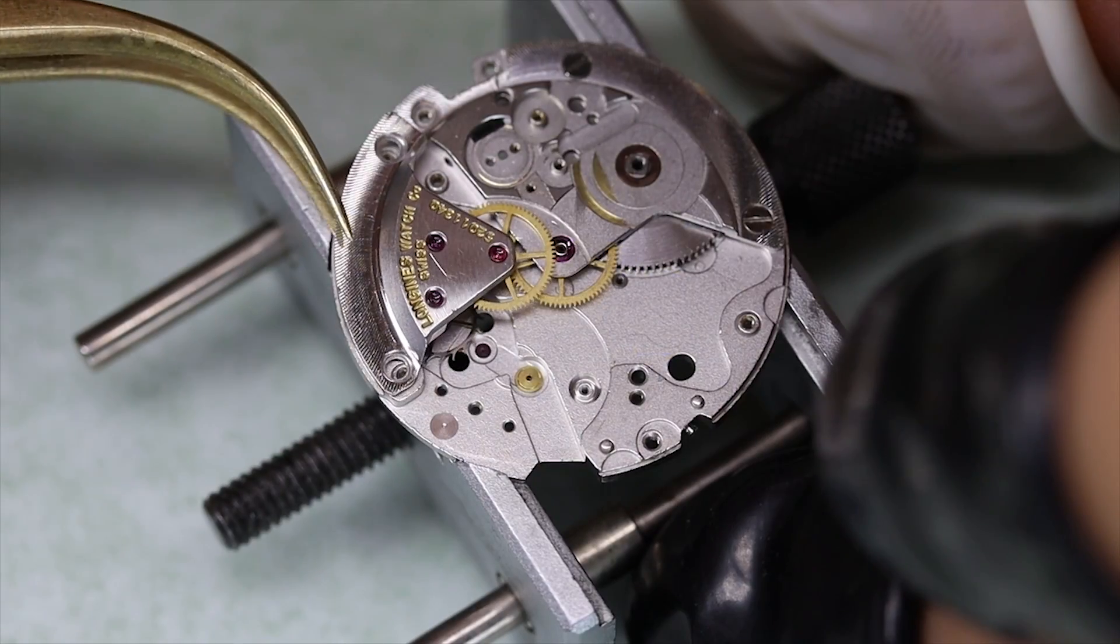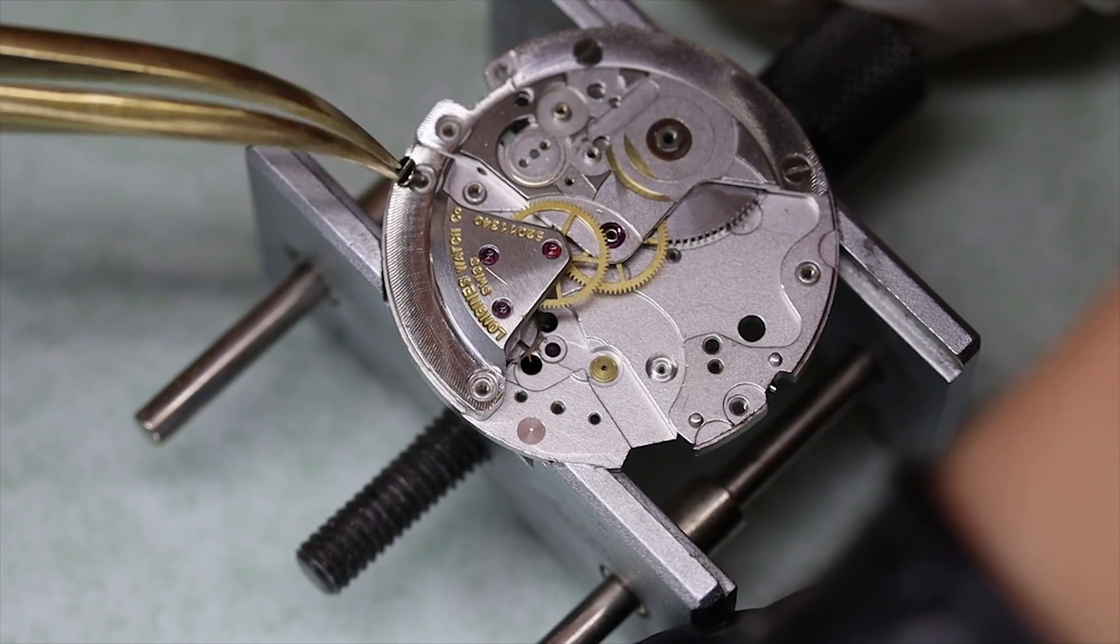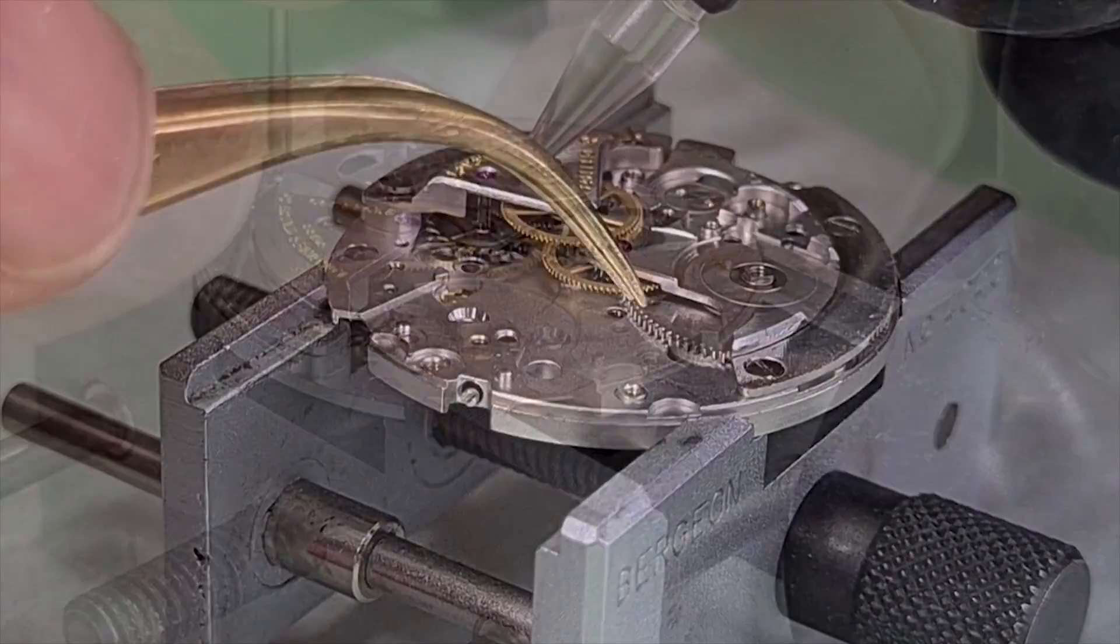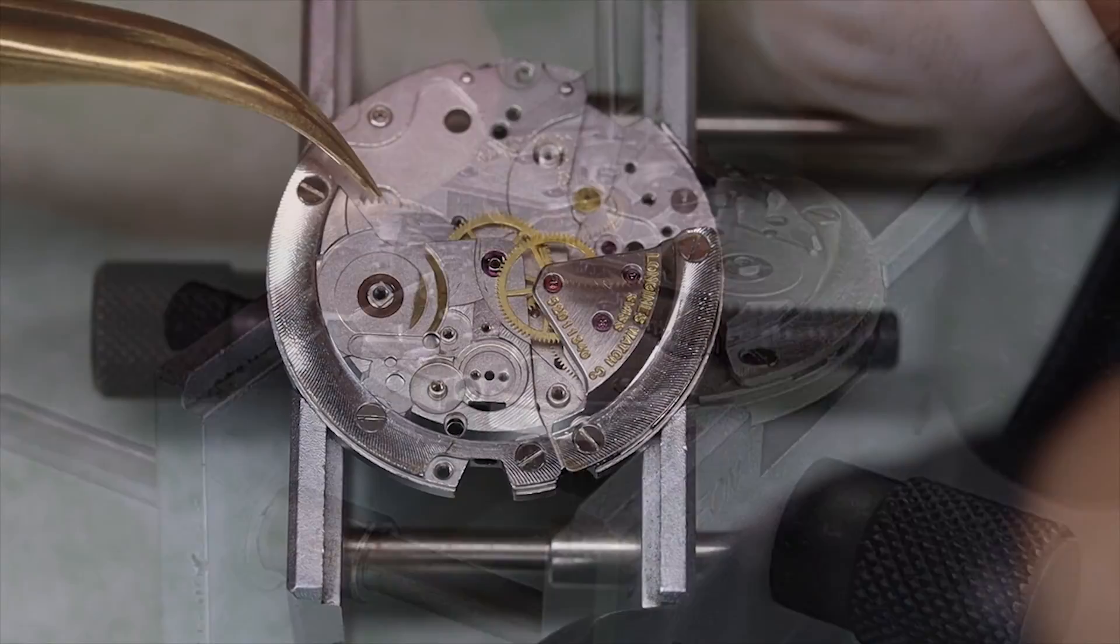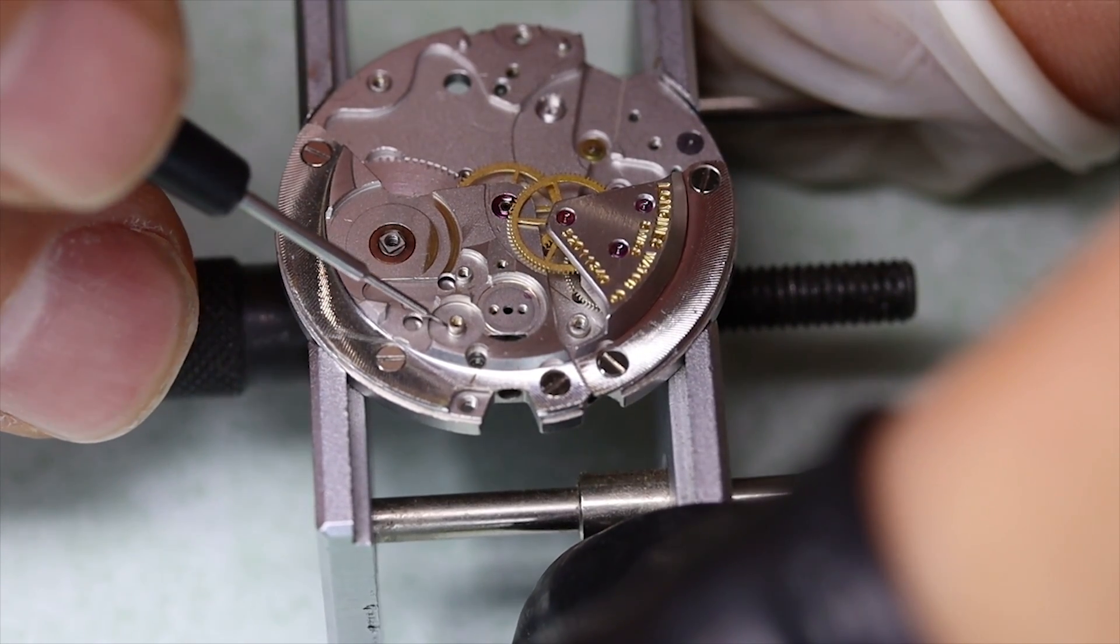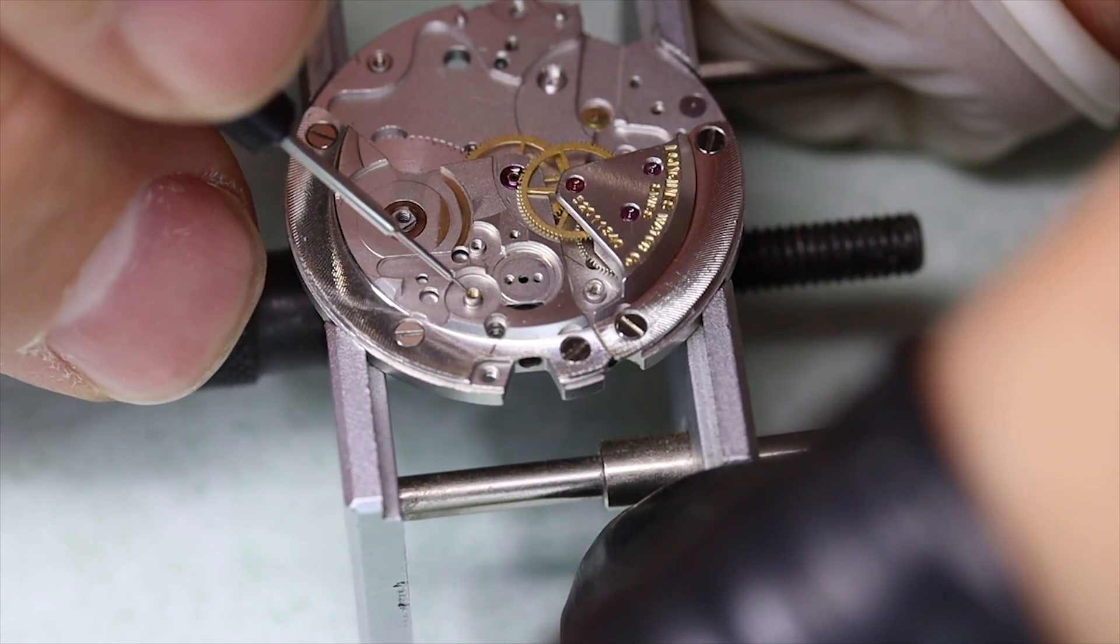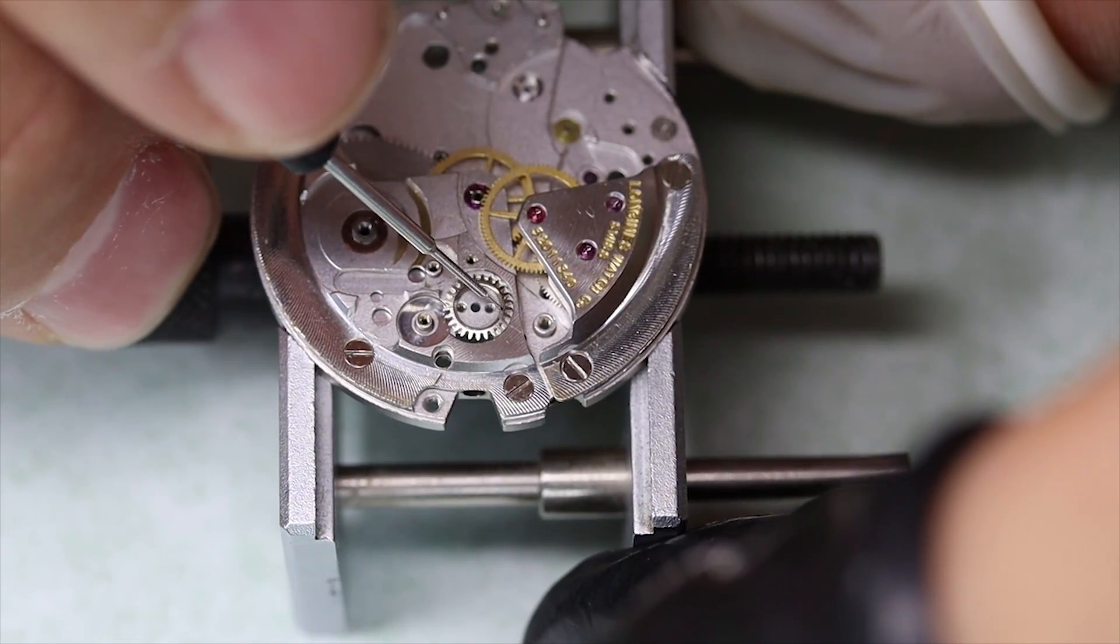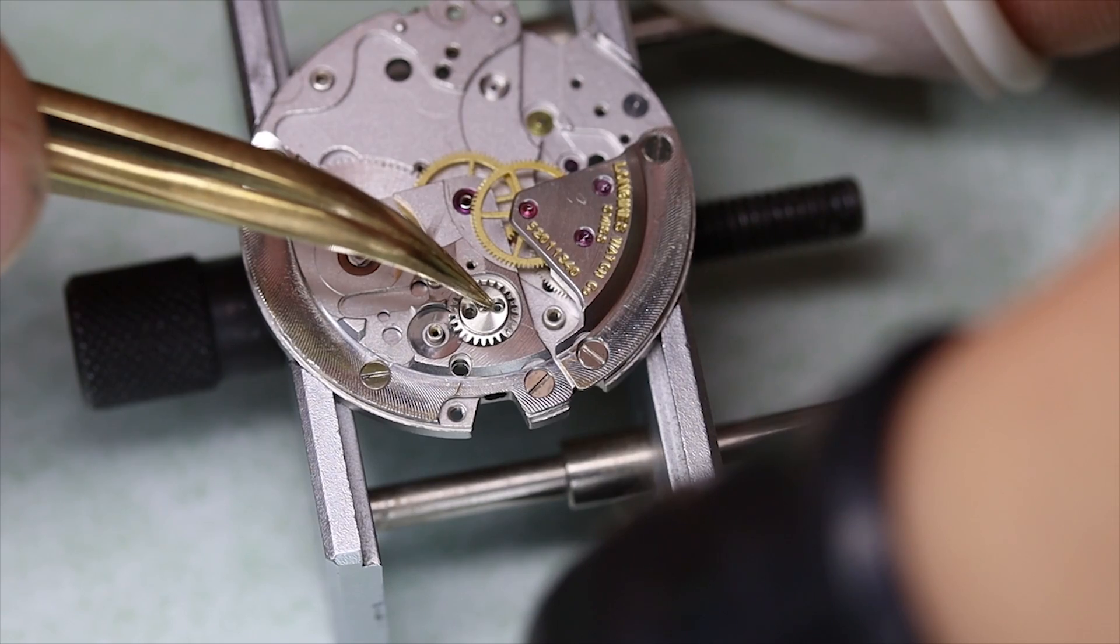Now as mentioned in the beginning of the video, the 6651 is basically identical to the 431. The main difference of course being that the 431 and the whole 430 family is a 36,000 beats per hour movement. There are a couple of small differences otherwise, one being the regulator but also this fourth wheel that we saw. The reason Longines went from 36,000 to 28,800 isn't entirely documented. It was always said it was due to wear, so that could explain the different fourth wheel.